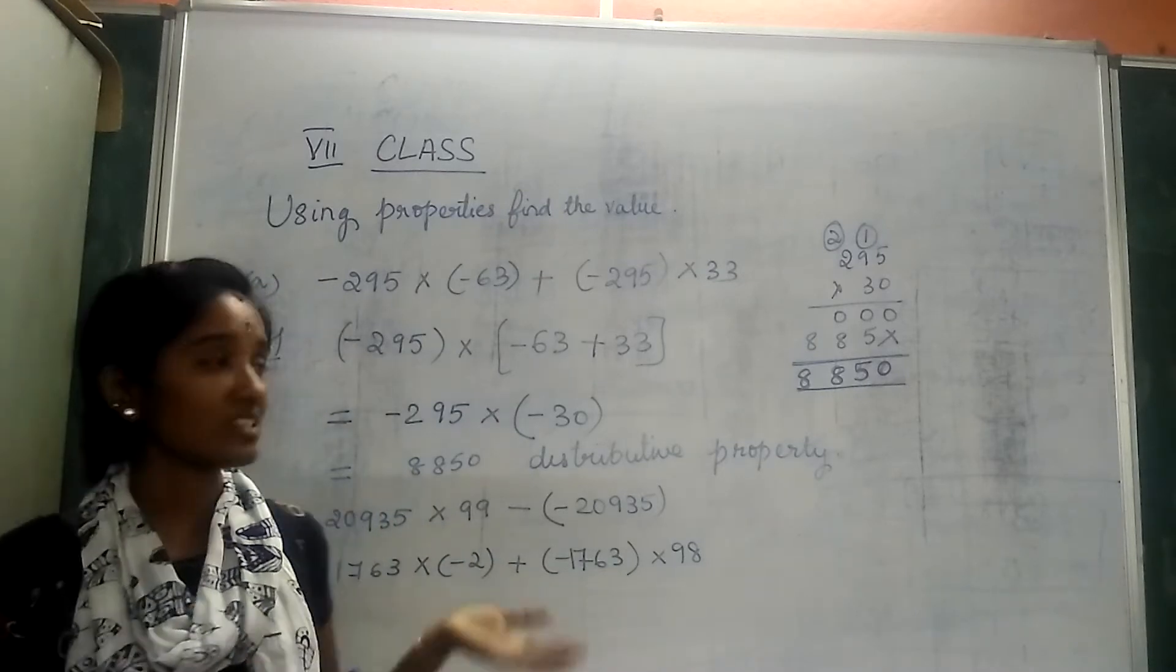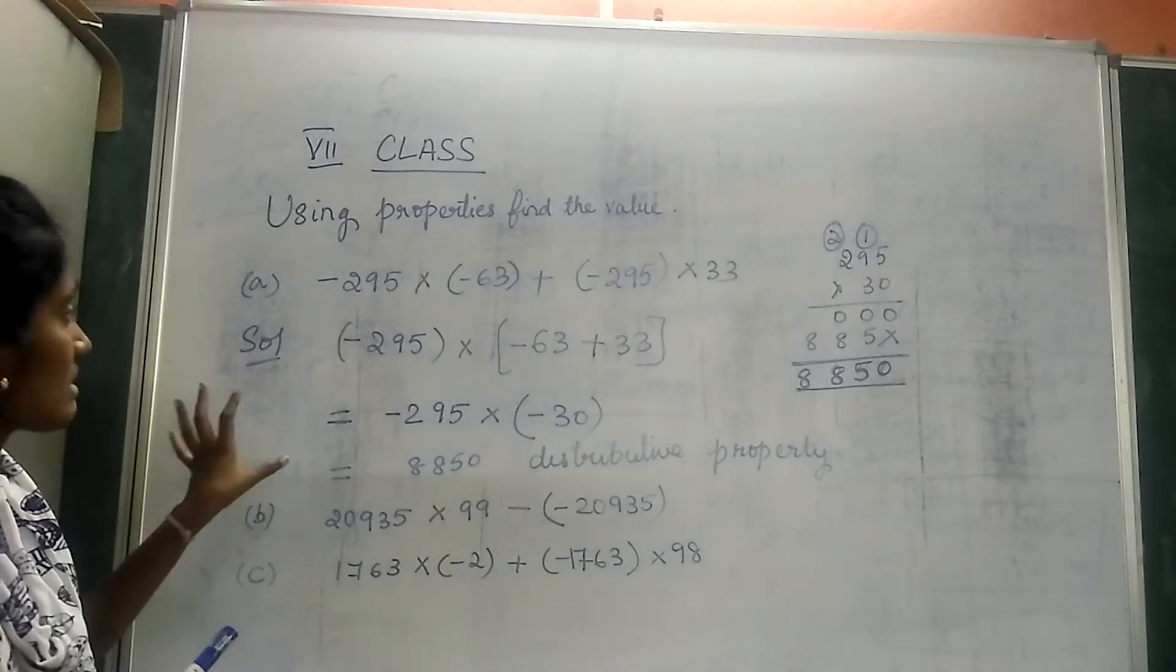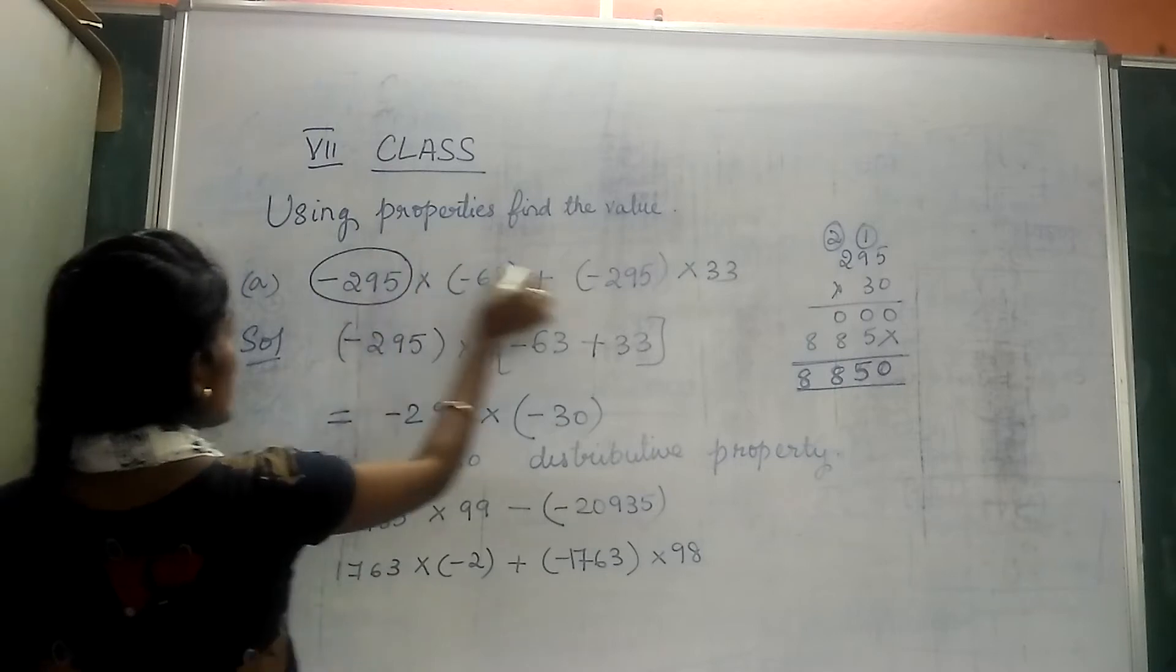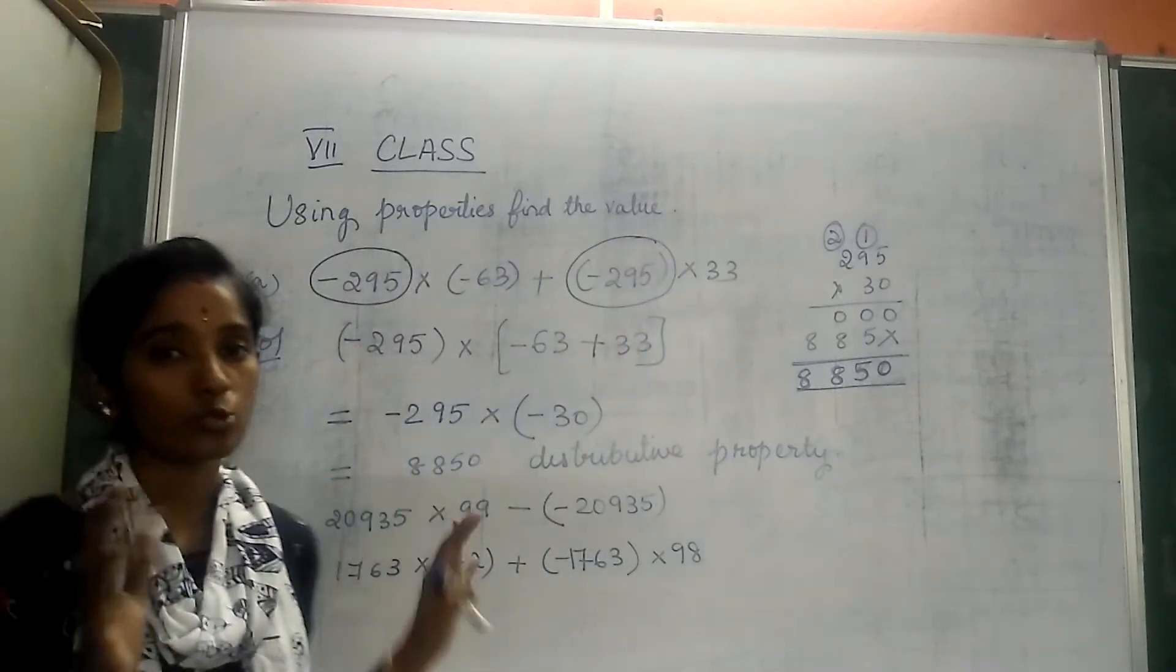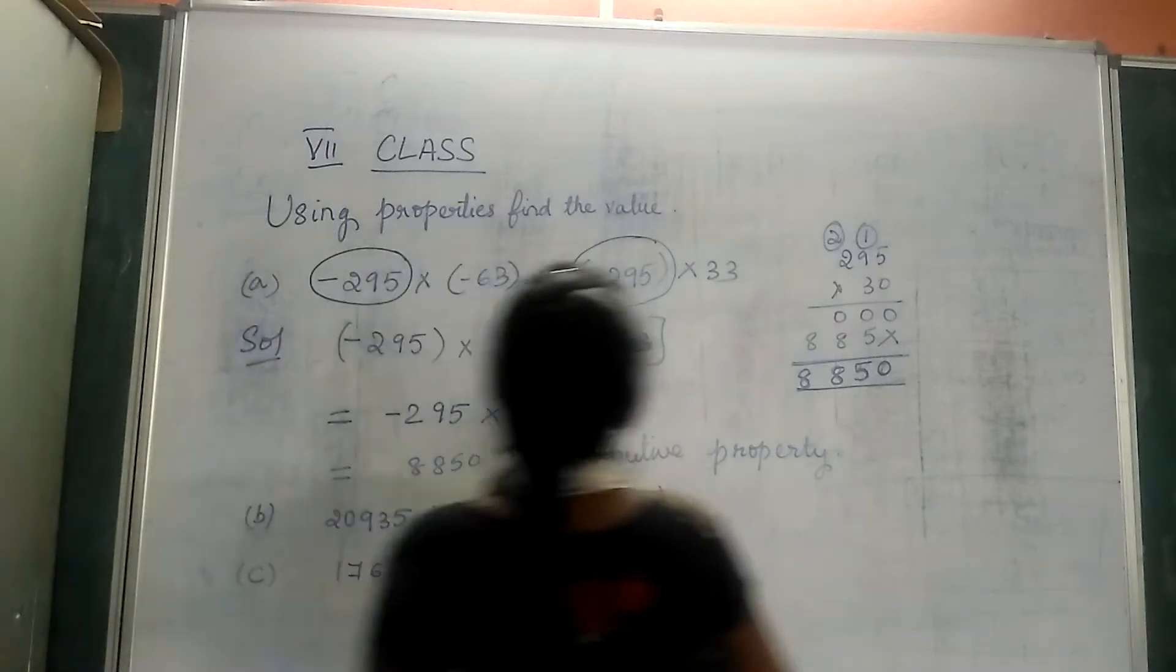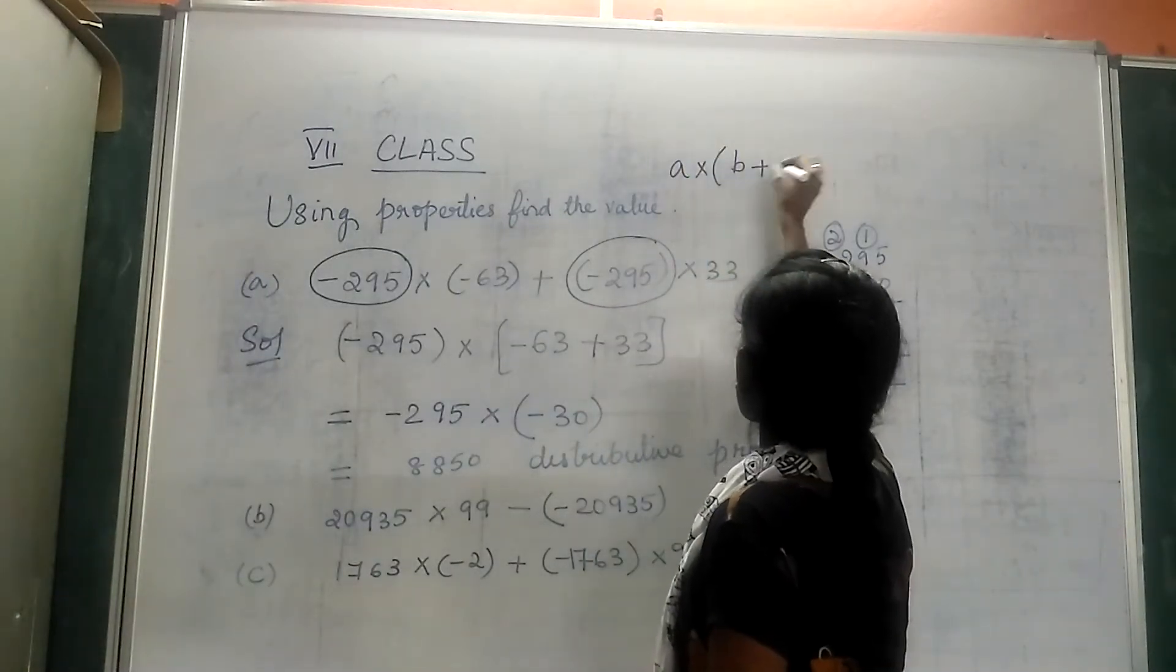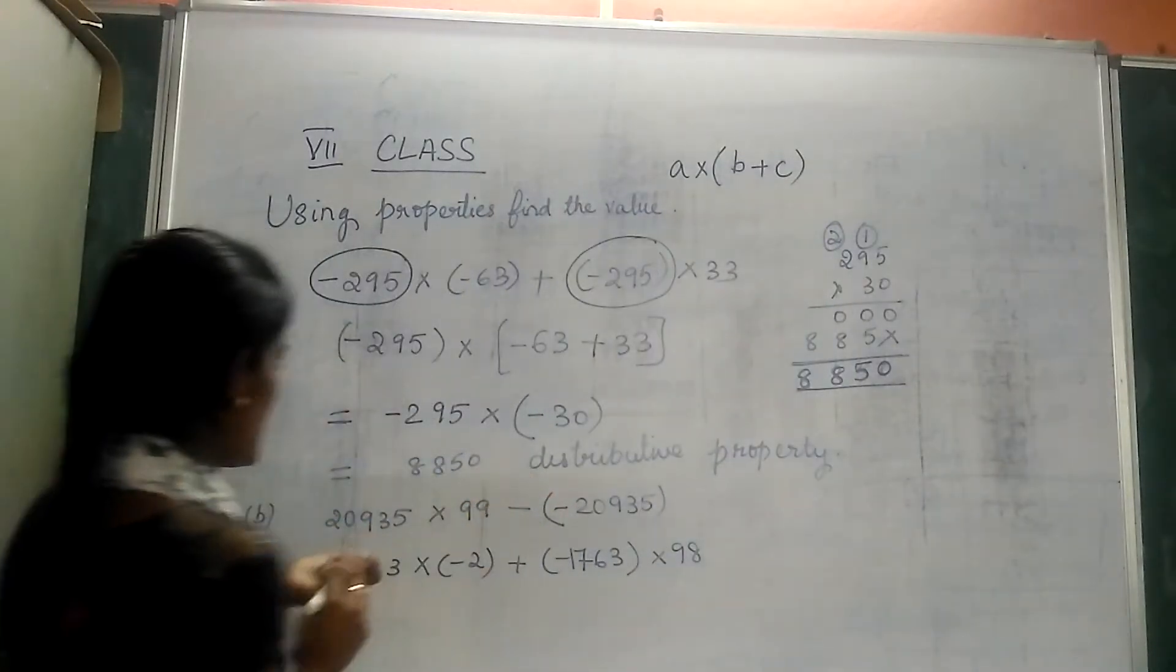Which numbers are the same here? If you see, we can see 295 and 295. Here it is same. The sign is also same. So what I do is I just take them out as we do it in the distributive property. We can do it in the distributive property like this: a × (b + c).